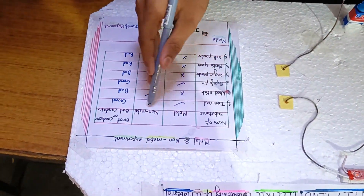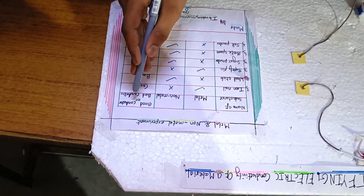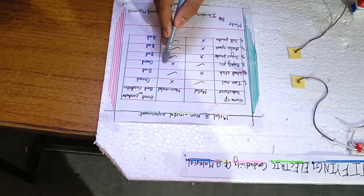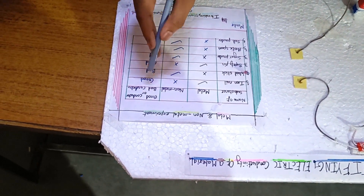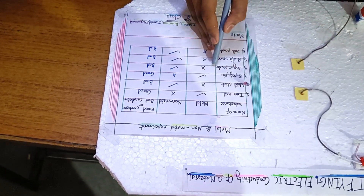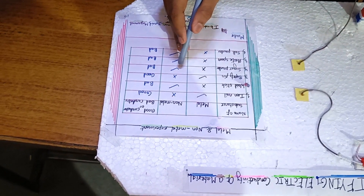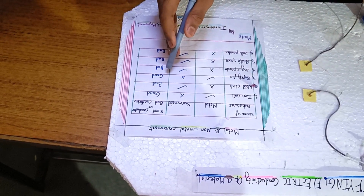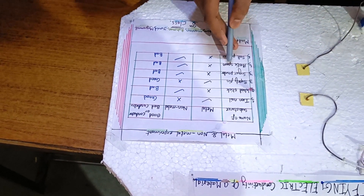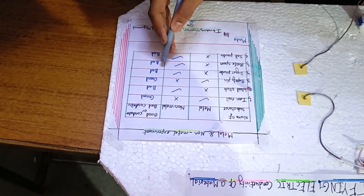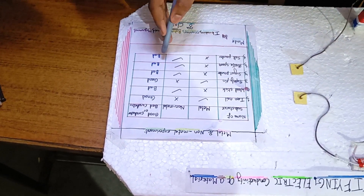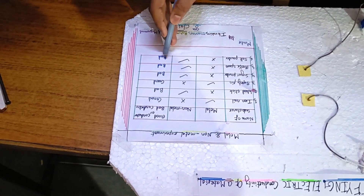Wood stick is a non-metal, so wood stick is a bad conductor of electricity. Safety pin is a metal, so safety pin is a good conductor of electricity. Sugar powder is a non-metal, so sugar powder is a bad conductor of electricity. Tracking spoon is a non-metal, so tracking spoon is a bad conductor of electricity. Salt powder is a non-metal, so salt powder is a bad conductor of electricity.